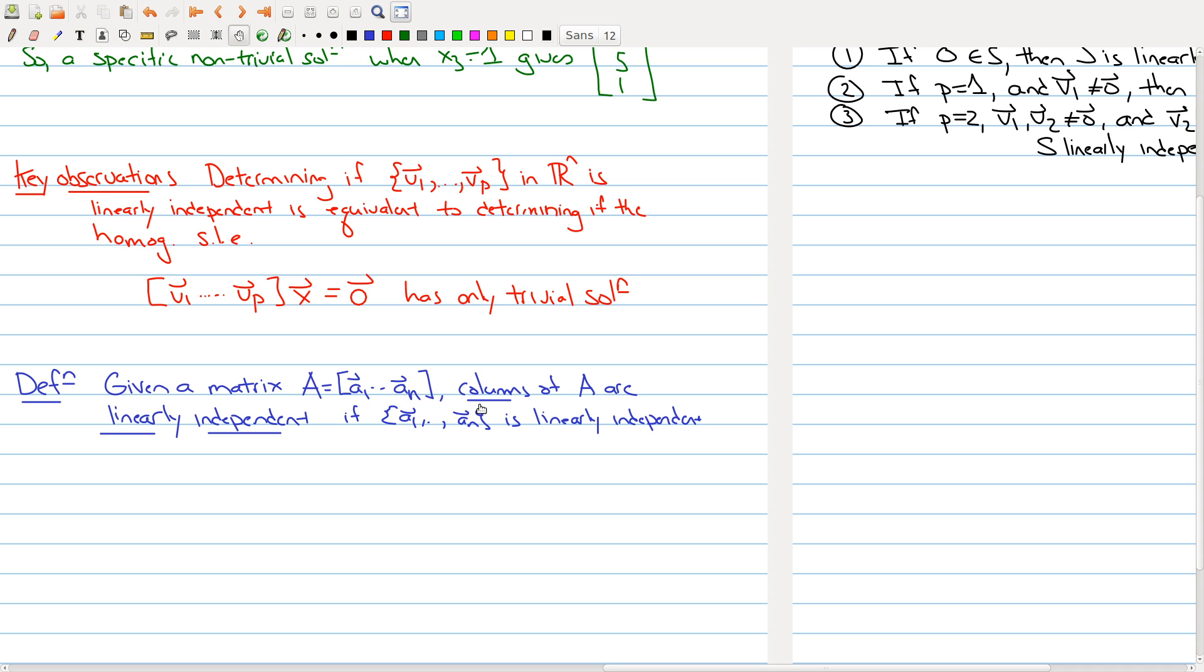Given a matrix A, the columns of a matrix A are linearly independent if you treat the columns as vectors and if they're linearly independent themselves. The columns of A are linearly independent.